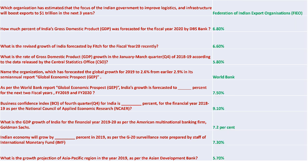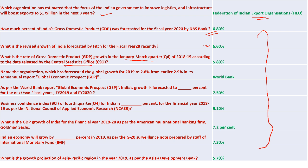The Federation of Indian Export Organisations estimated that India's focus on improving logistics and infrastructure will boost trade to 1 trillion dollars in the next three years. GDP was forecasted for fiscal year 2020 by DBS at 6.8%. The GDP growth rate in the January-March quarter was 6.6% as per CSO data. The GDP growth fell to 5.8% in Q4. The World Bank forecasted global growth in 2019 to be 2.6%, down from the earlier 2.9%. As per World Bank's Global Economic Prospects, India is forecasted to grow at 7.5% in the next fiscal.